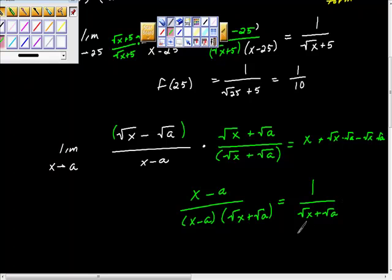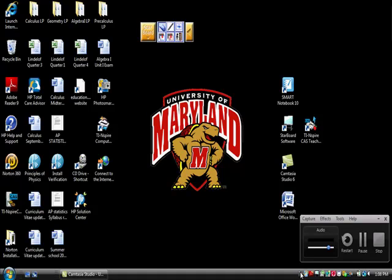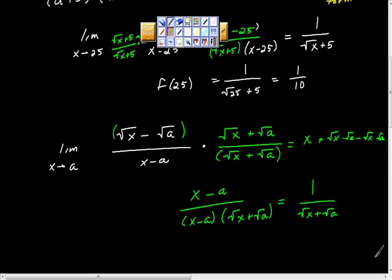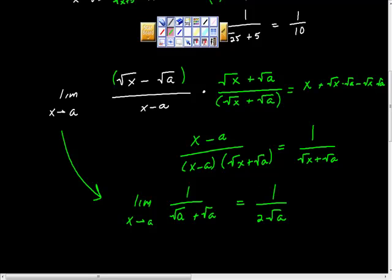And now we want a. Okay, keeping in mind we wanted this. We wanted the limit as x approaches a of 1 over square root of x plus square root of a. Okay, if we want x approaches a now, we'd get 1 over 2 square roots of a.